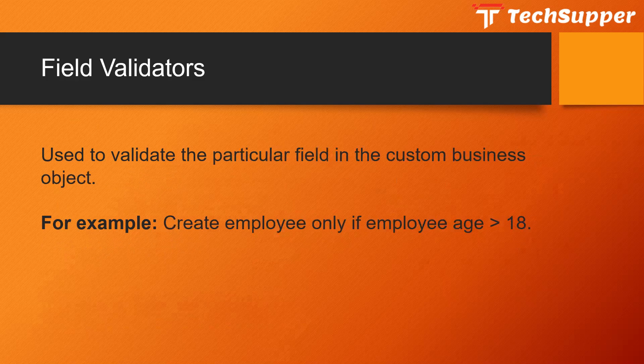Field validators are specific to individual fields, similar to field triggers. They are used to validate a particular field in a custom business object. For example, on an employee business object with an age field, you can allow record insertion only if the employee age is greater than 18; otherwise, throw an error stating the employee cannot be inserted because their age is less than 18.